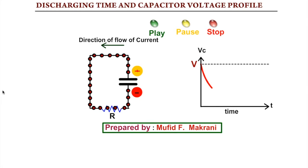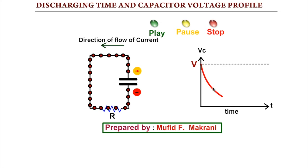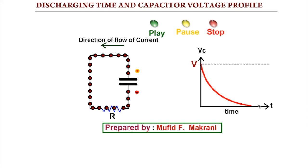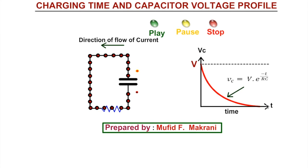You can note down that the graph is an exponential graph, and that shows the discharging of the capacitor.